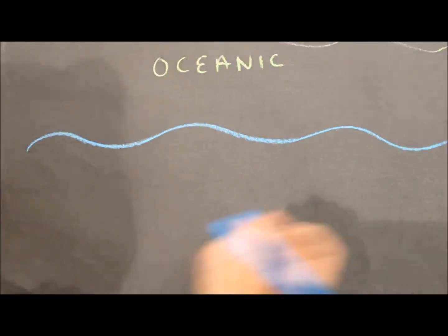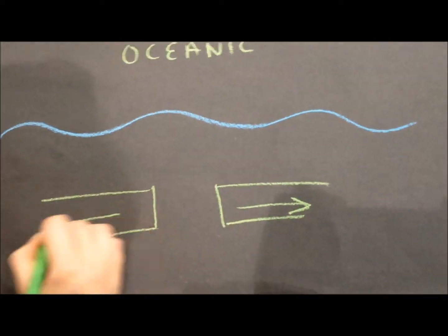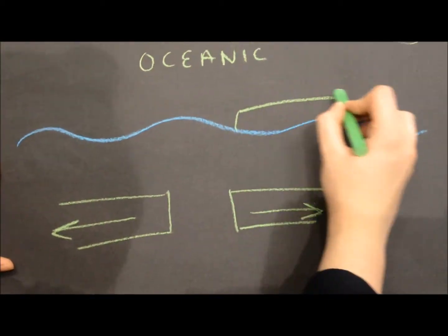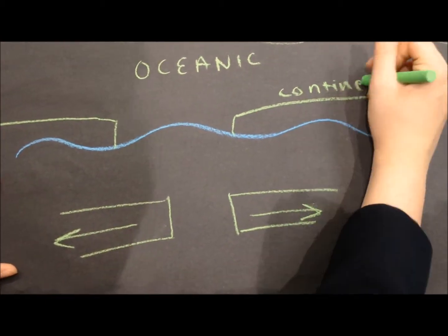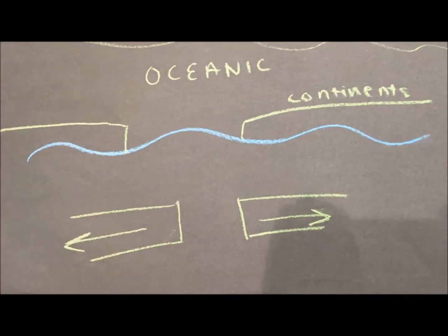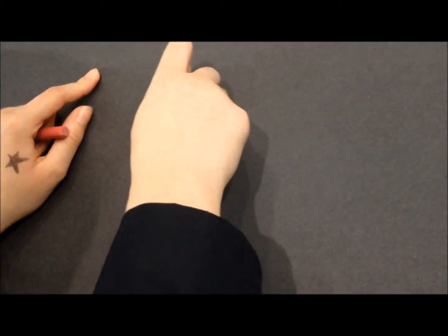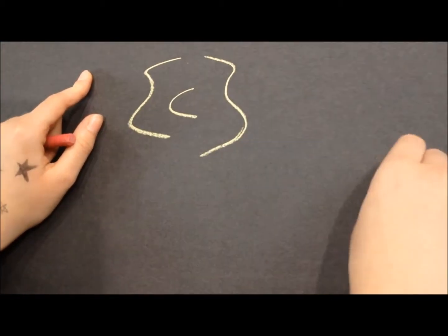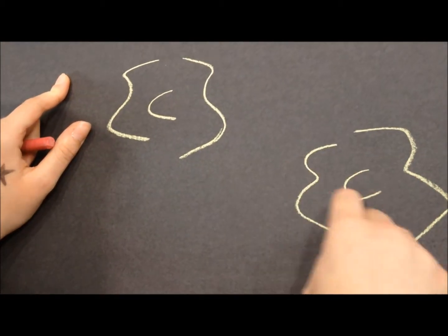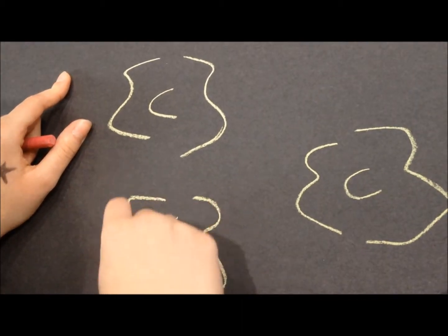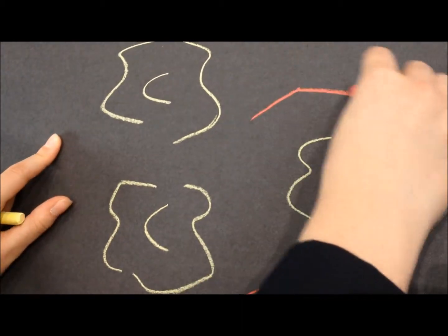At oceanic divergent plate boundaries, an active spreading ridge is formed and the continents start to move away or drift away because of the motion of the plates. All the tension causes mid-ocean ridges to form, which appear to be mini mountains, as well as rifts and fracture zones.